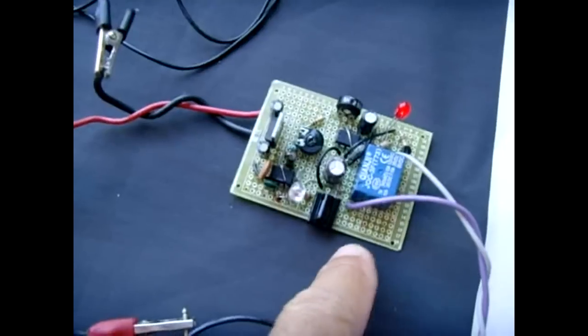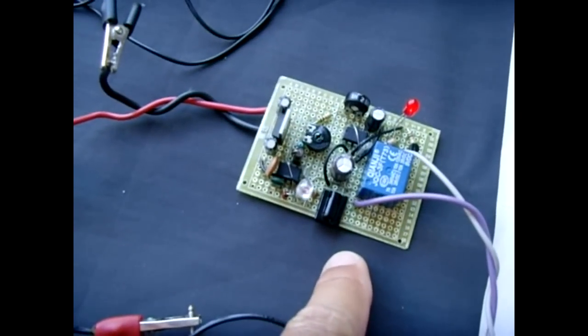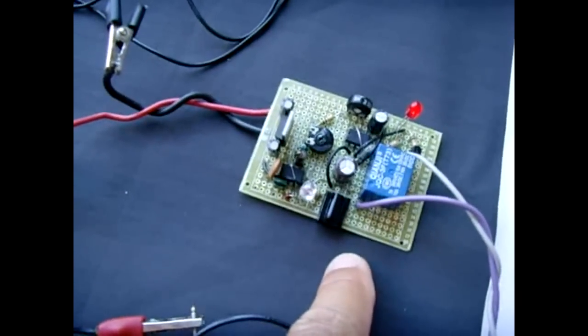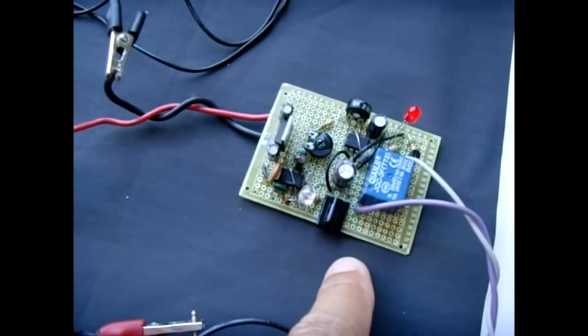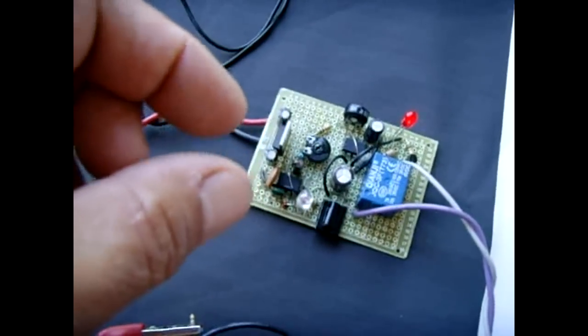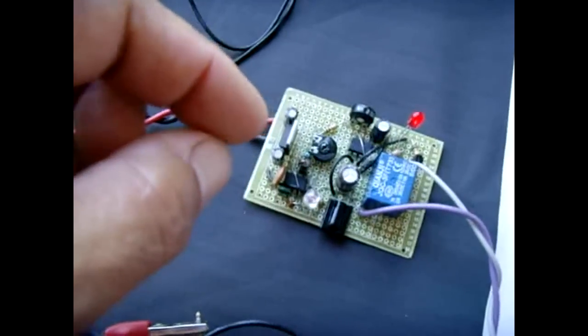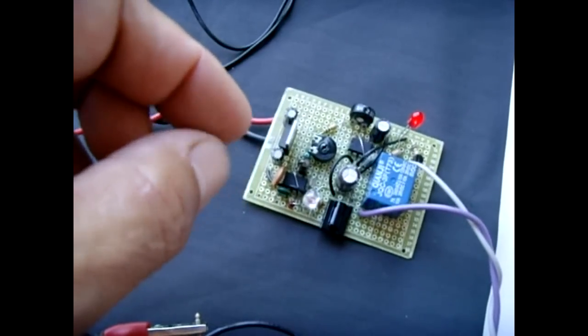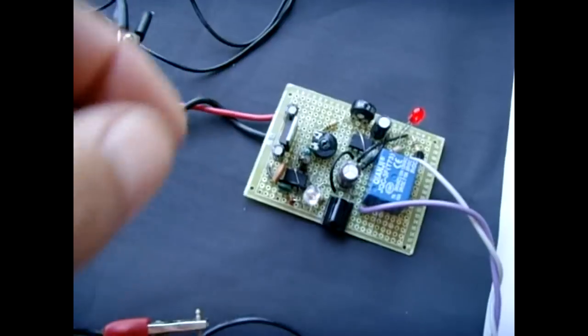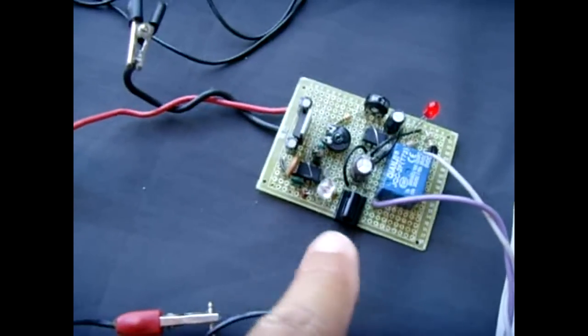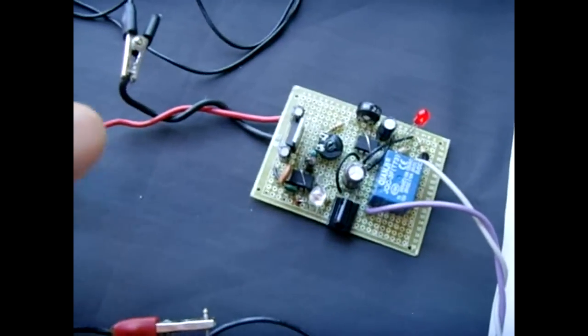This circuit could be placed inside a regular 120-volt wall switch, and what you would do is have a small potentiometer like a black knob that would stick out of the cover plate on the switch, and you'd have just these two sensors exposed with the knob so you can wave your hand and have it trigger for the duration you set.